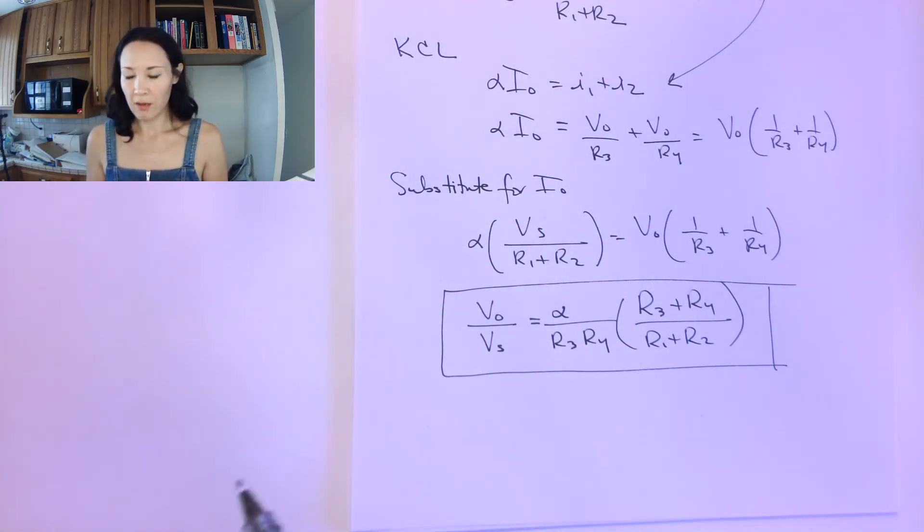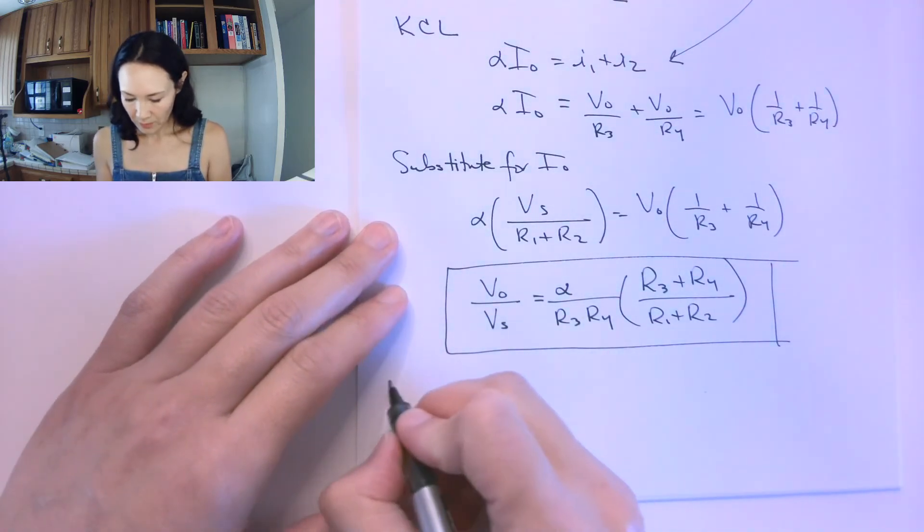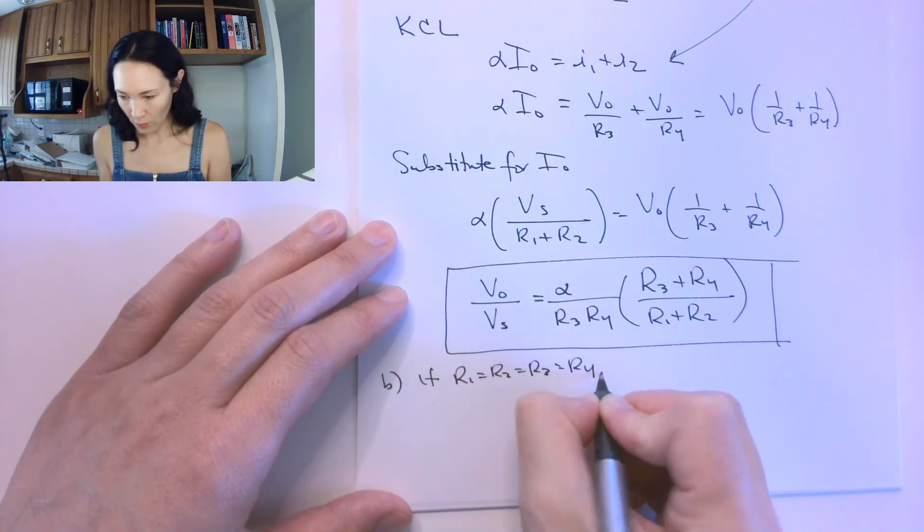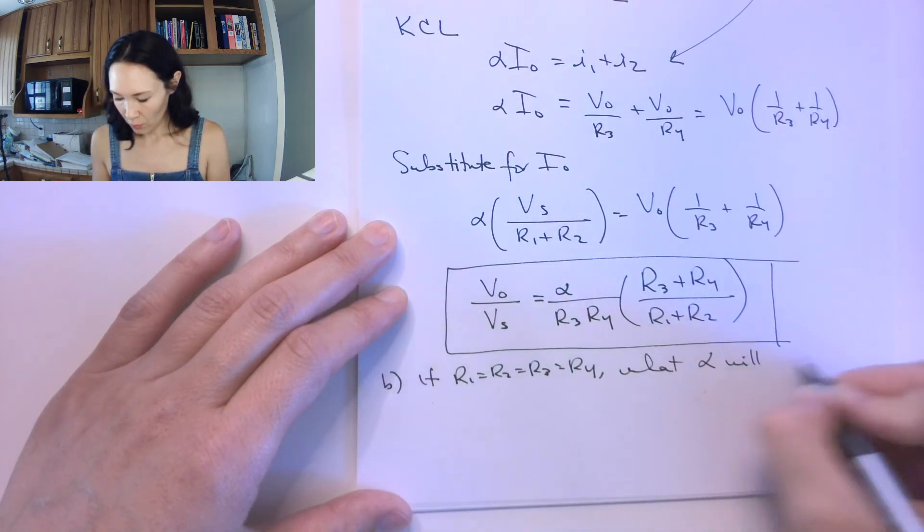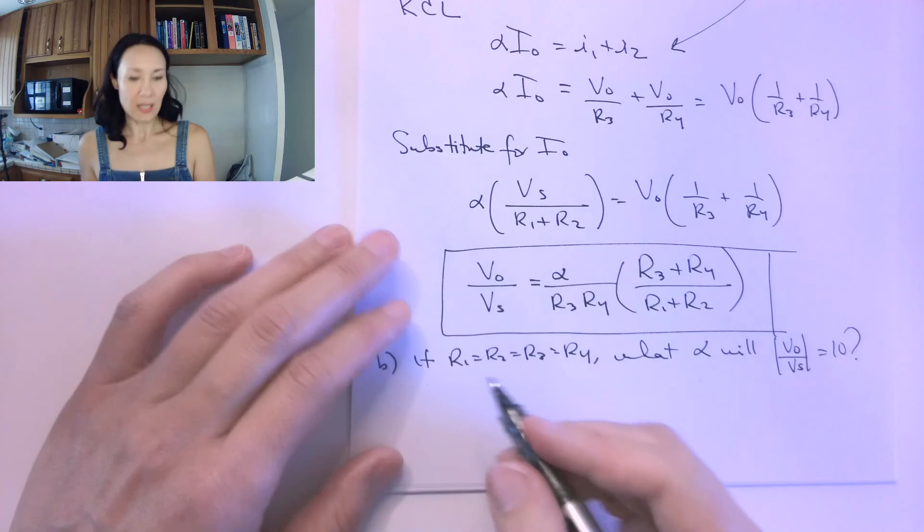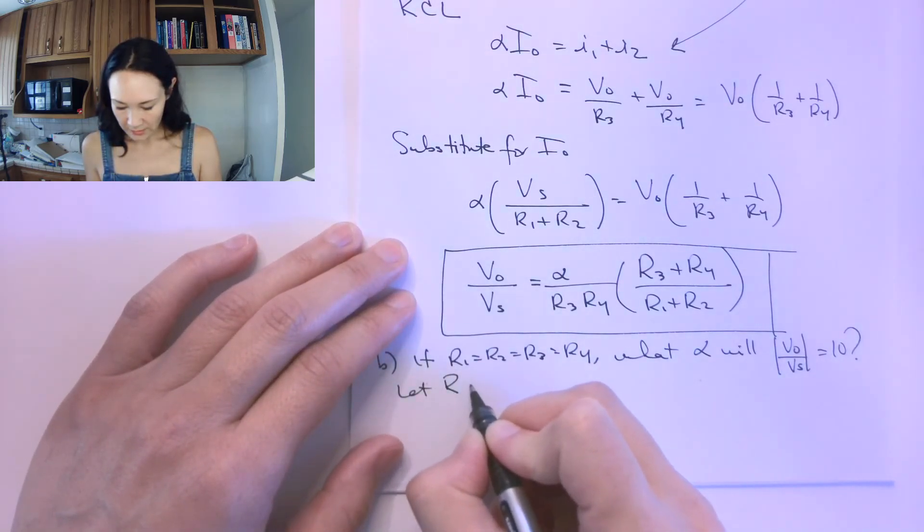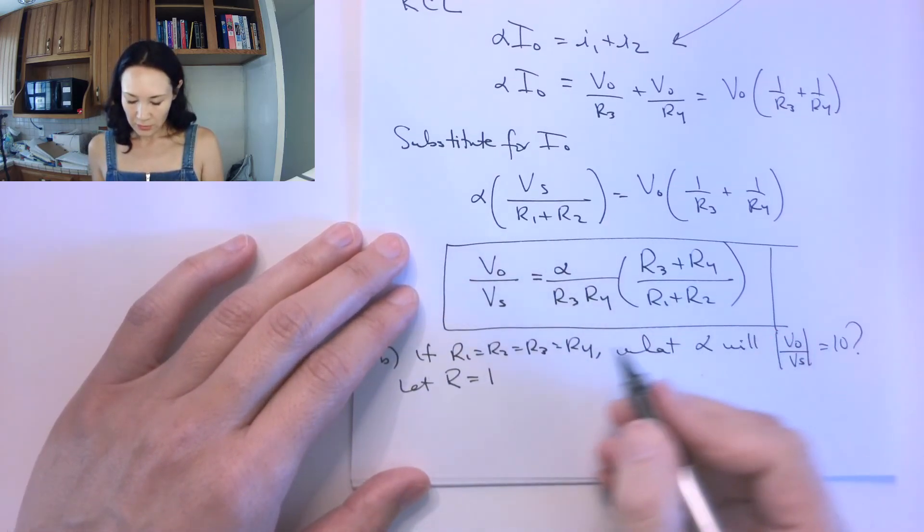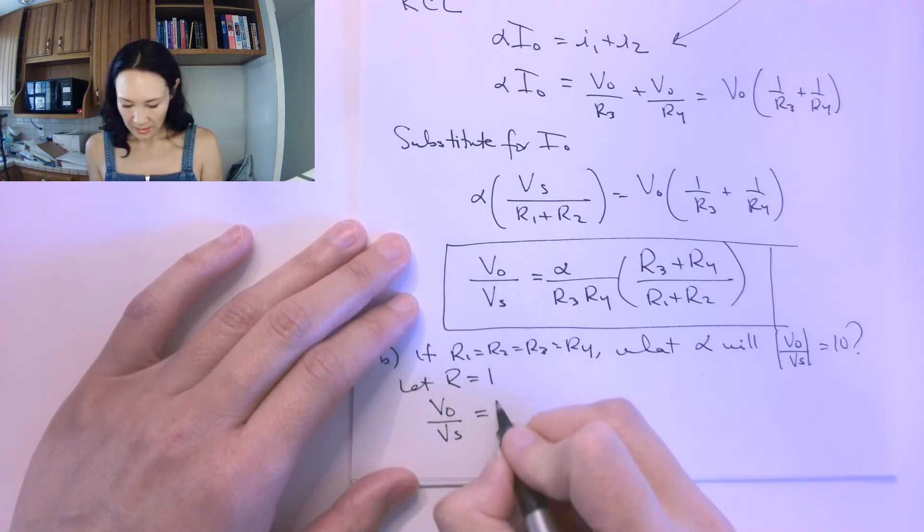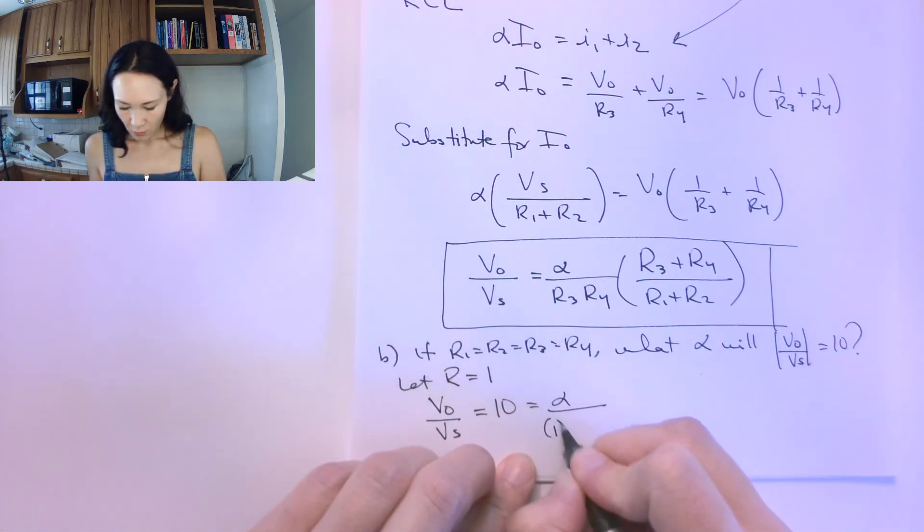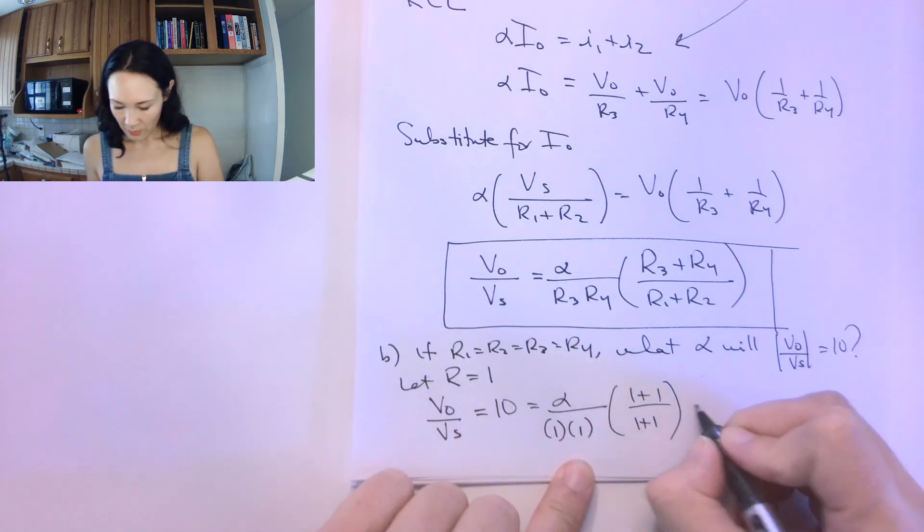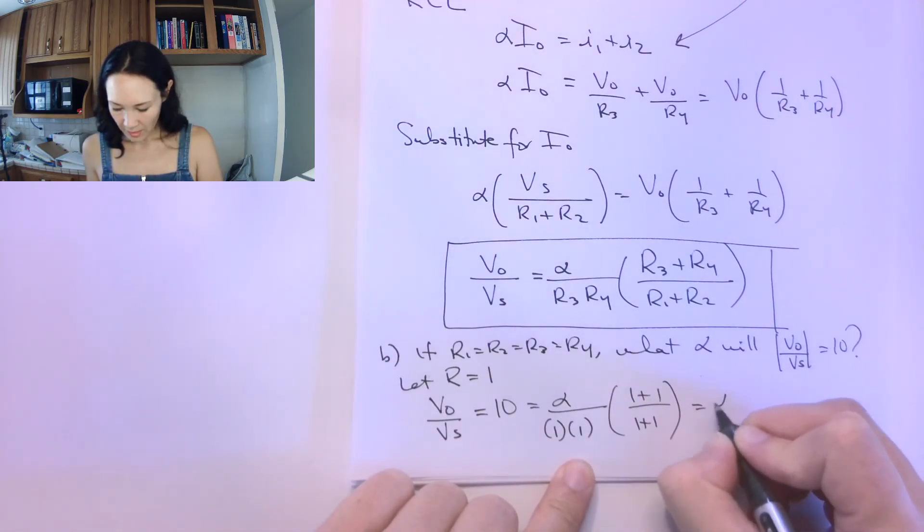Now, the second part of the question for this example problem was if R1 equals R2 equals R3 equals R4, what alpha will make V0 over Vs equal to 10? For simplicity, let's just let all these resistors be 1. If we let all these resistors be 1, then our V0 over Vs, which we want to be 10, is going to be alpha over 1 times 1 times 1 plus 1 over 1 plus 1. This is 2 over 2, and this is divided by 1, so this is just going to be alpha equals 10.